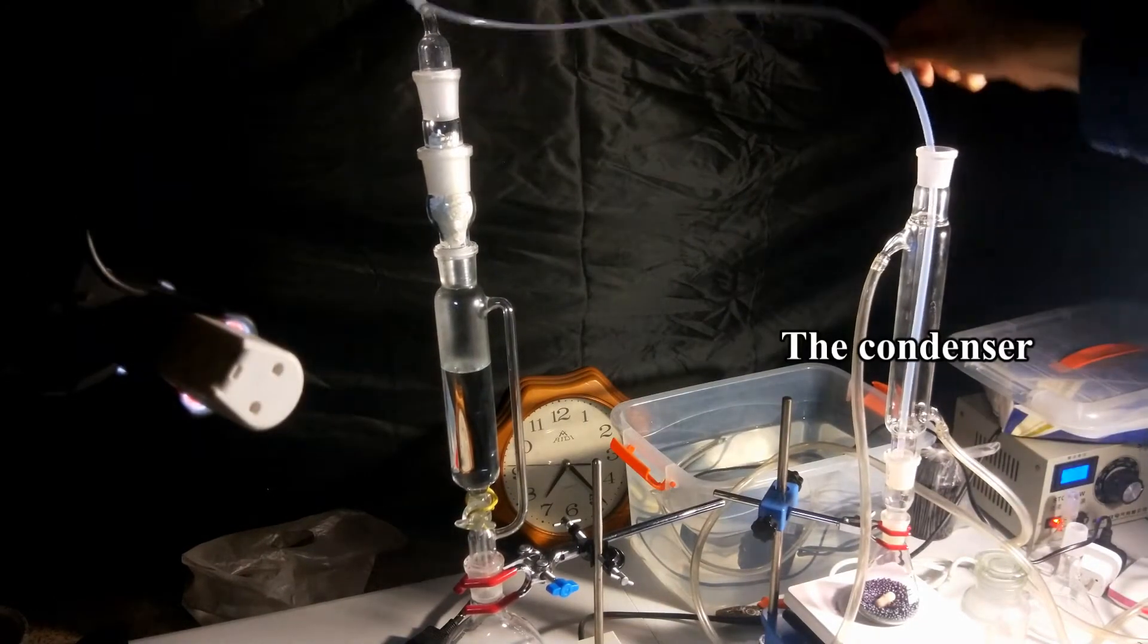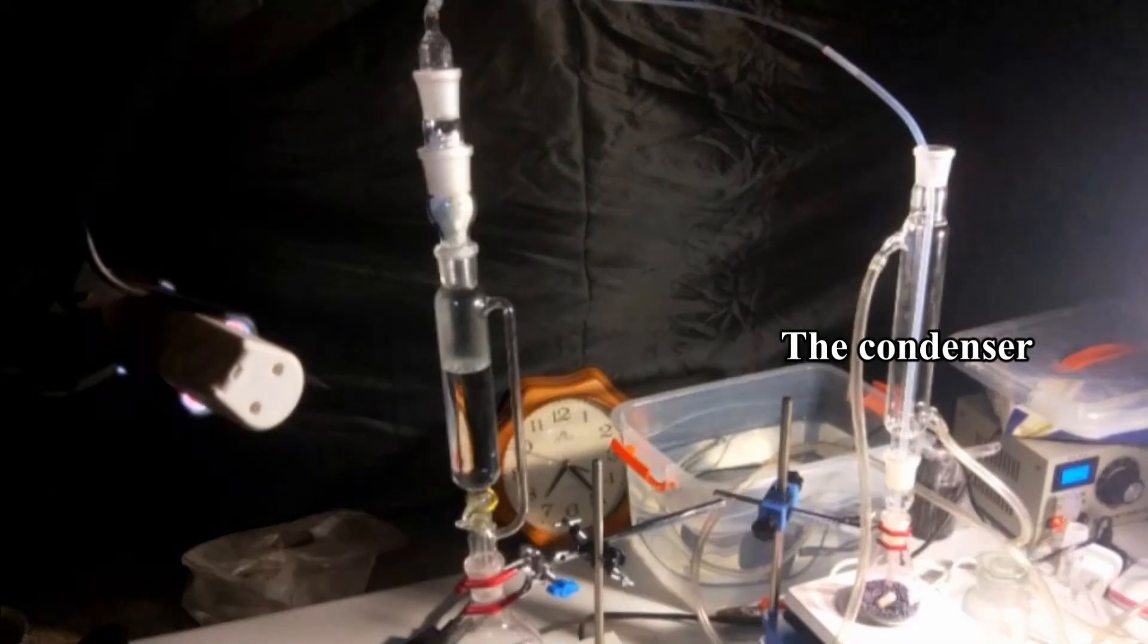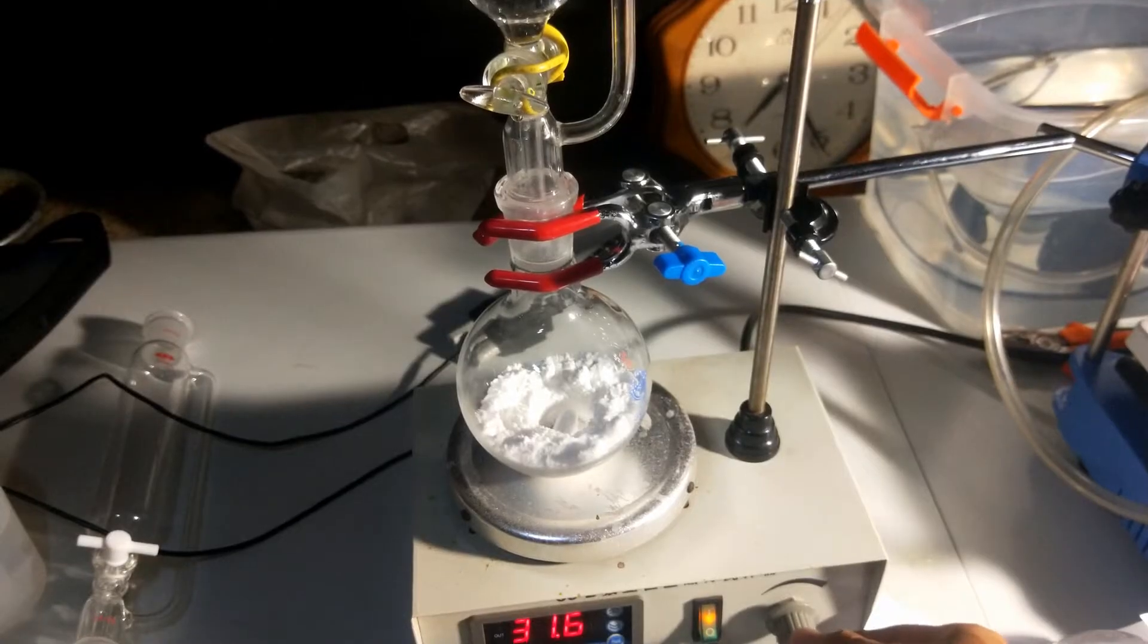That condenser is used as a buffer zone for chlorine gas to have enough time to react with iodine instead of me. Okay, everything is prepared and ready. Let's get started.